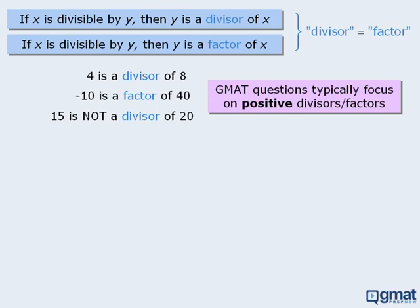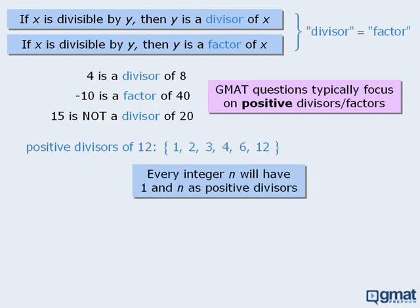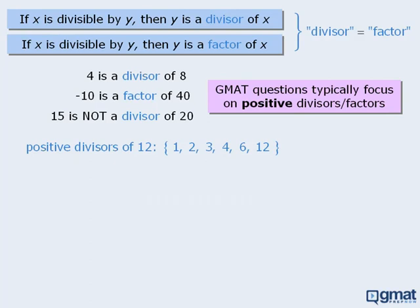Let's practice our knowledge of divisors. What are the positive divisors of 12? The positive divisors of 12 are 1, 2, 3, 4, 6, and 12. All of these integers divide into 12 without leaving a remainder. Notice that the positive divisors of 12 include 1 and 12. As you might imagine, every integer n will have 1 and n as its positive divisors. The positive divisors of 9 are 1, 3, and 9.